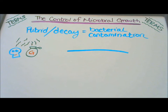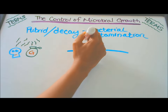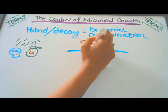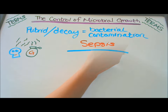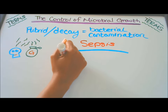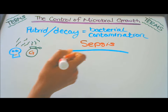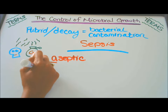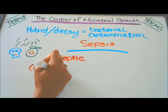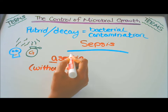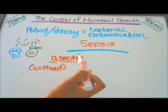Our last term and definition: putrid or decay means there is bacterial contamination, and this is called sepsis. An area or object that is free of pathogens is called aseptic — 'a' meaning without, and 'septic' meaning putrid or decay.